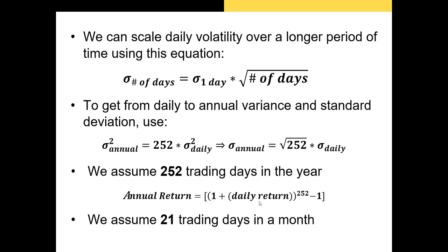Now, when we want to scale up a daily return, we do the same thing using the time value of money formula. Essentially, we're going to take 1 plus our daily return to the power of 252, because again, 252 trading days, subtract 1 to get rid of the principal, and now we have our annualized return. Now, we can also do the same thing with volatility.